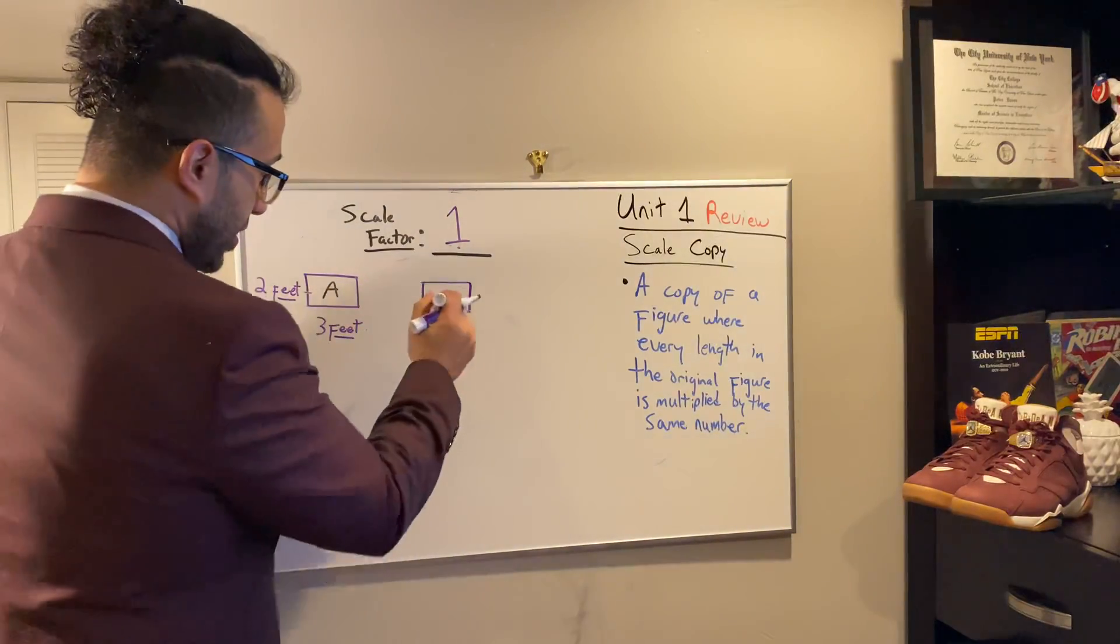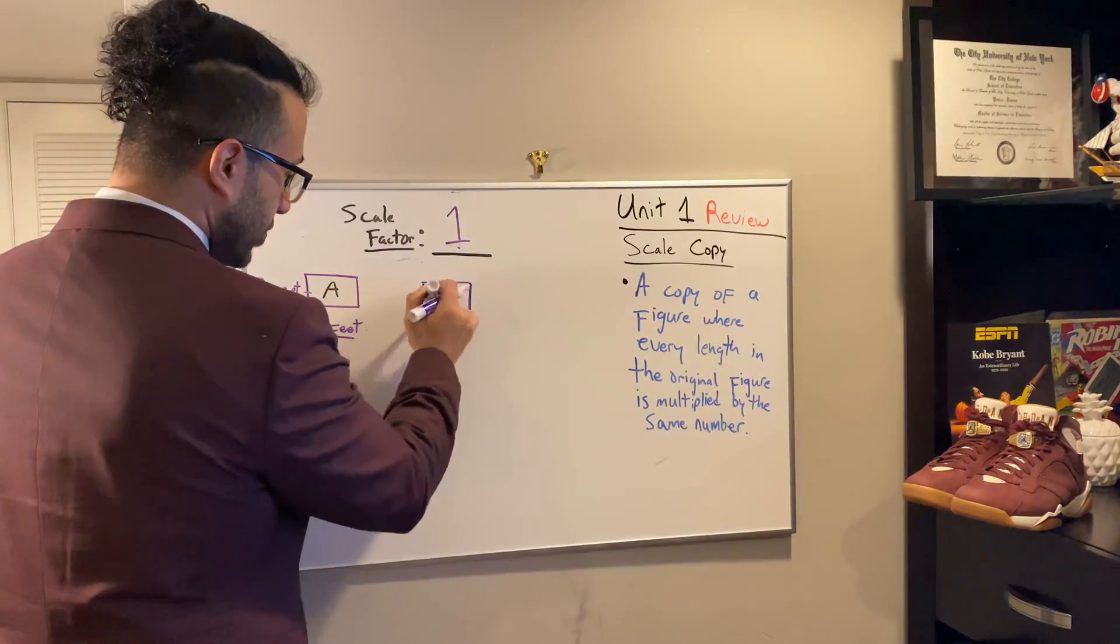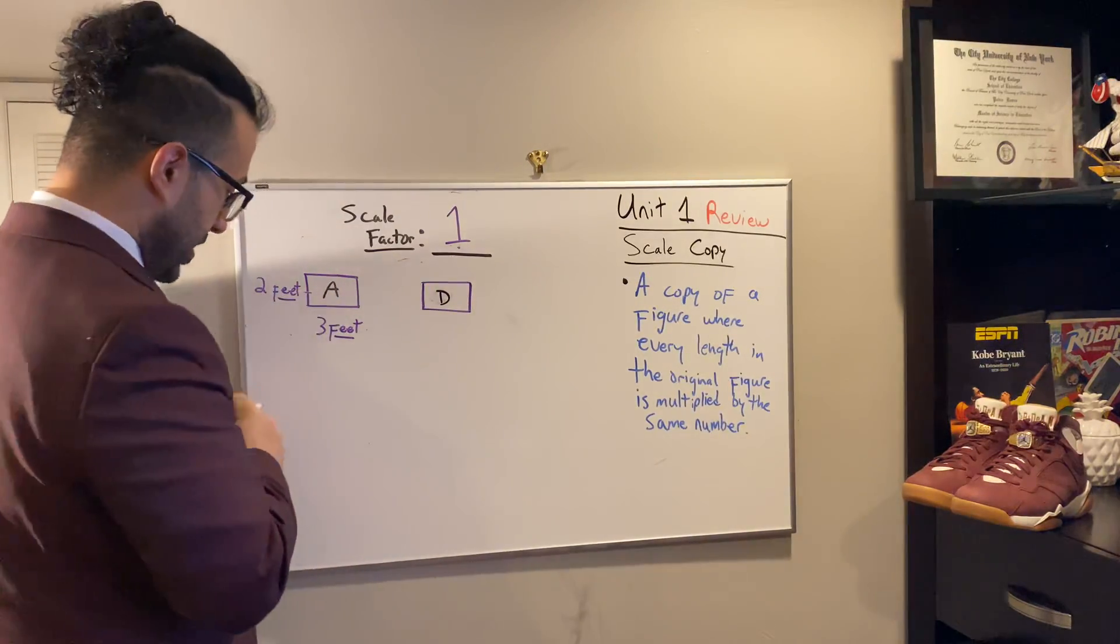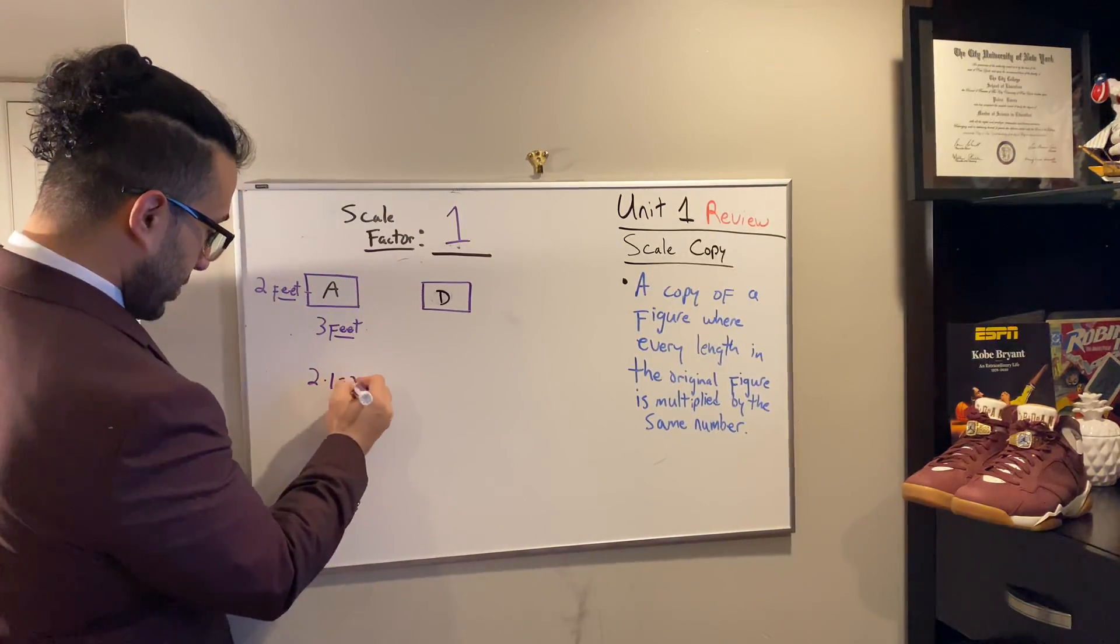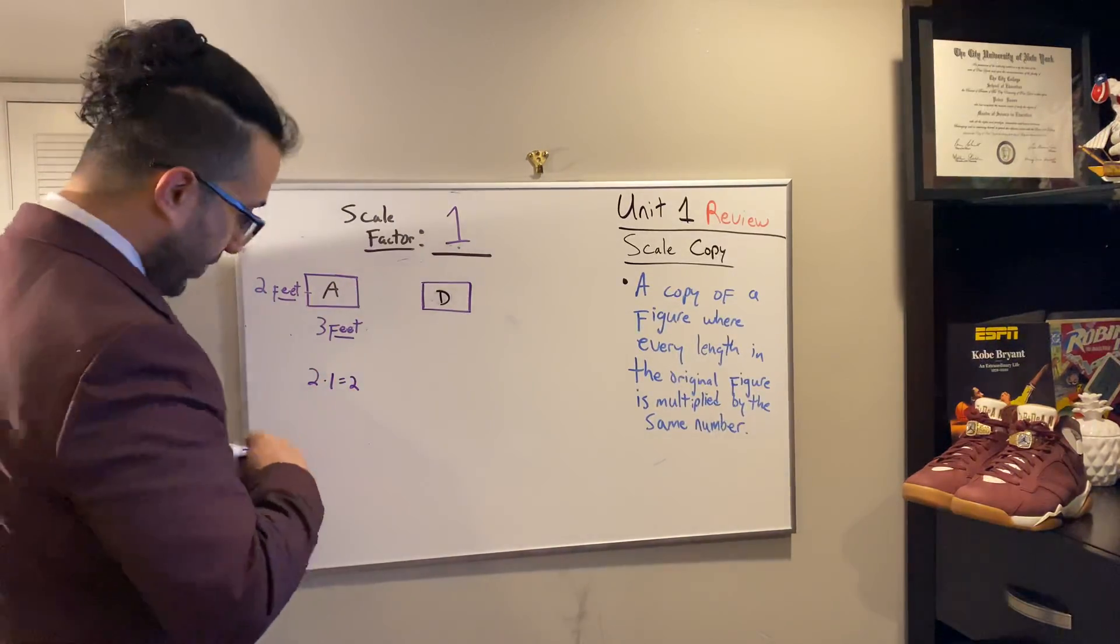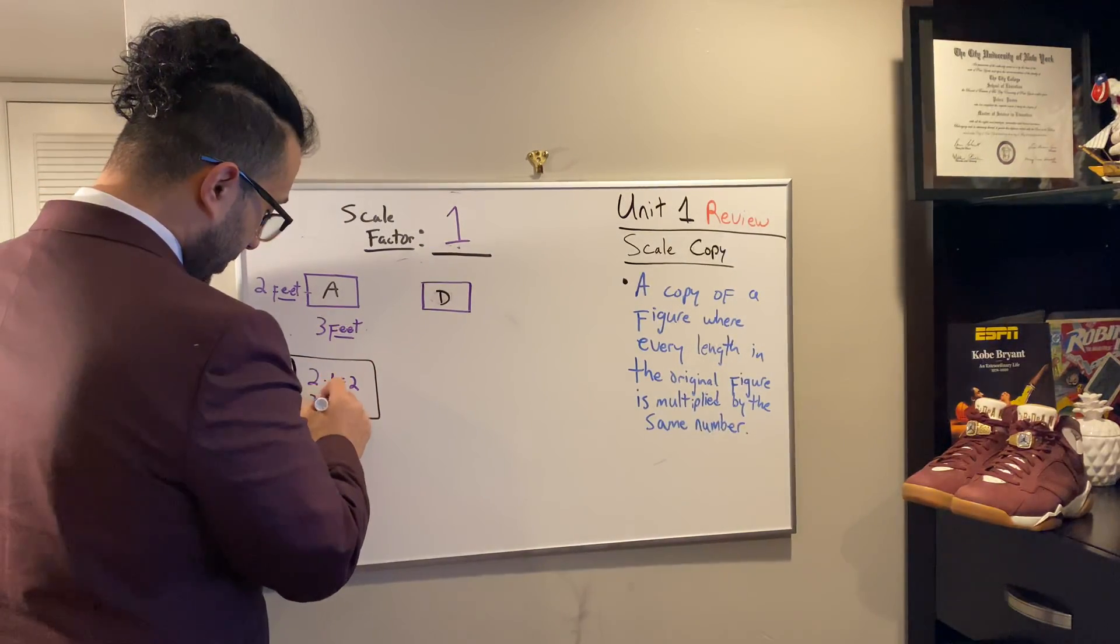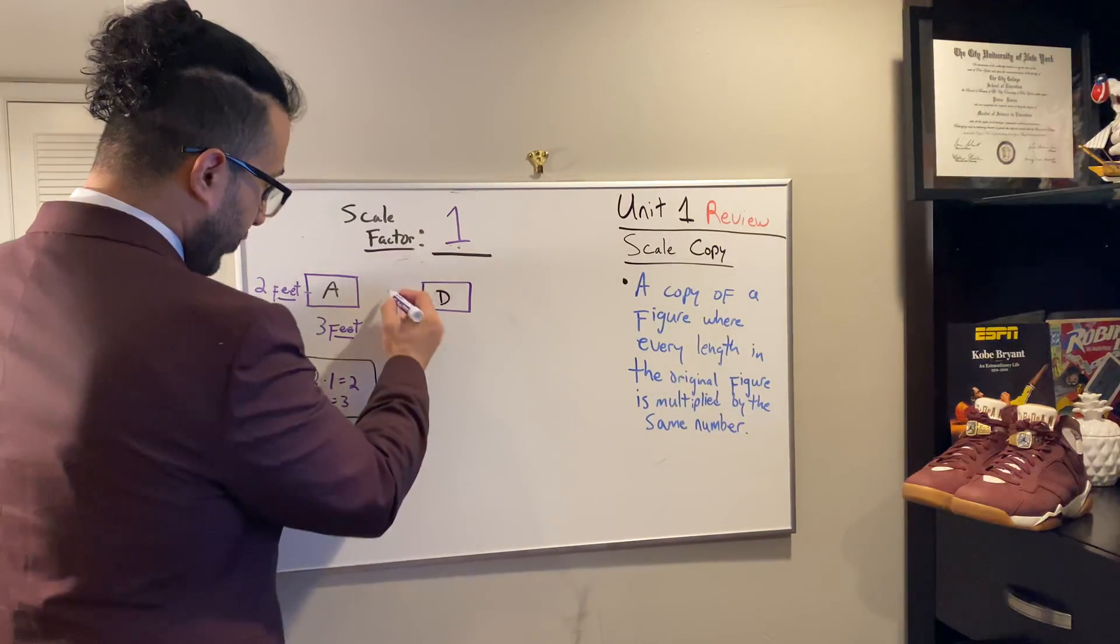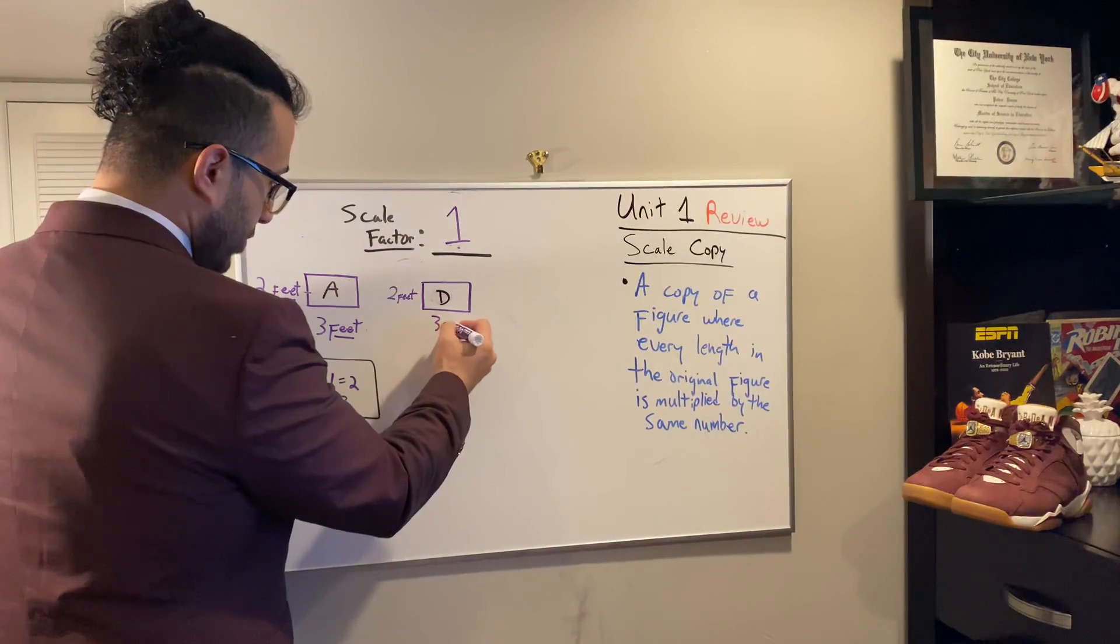We're also going to call this B. Actually, we use B and we use C. Let's use D. Two times one, let's not get lazy, is two. Oh, get lazy. Forgot my think box. And three times one is three. So the new figure has the same exact measurements of the original figure.